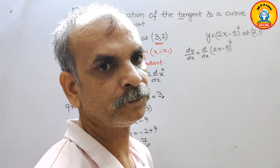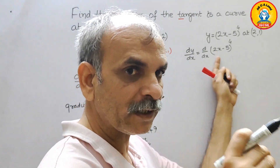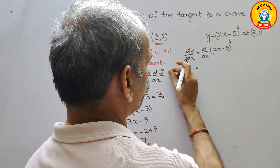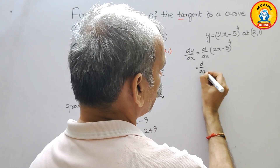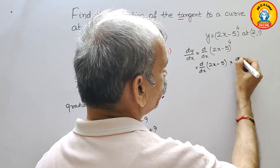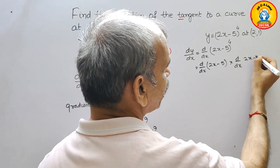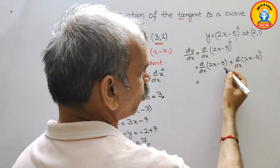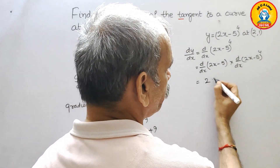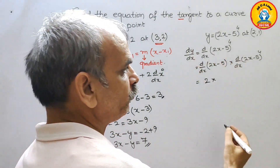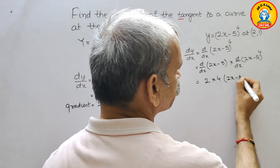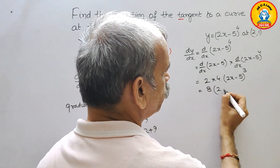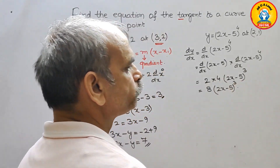Here we have to use the chain rule. In the chain rule, first we differentiate whatever is inside the bracket, then we differentiate the bracket with the power. So you get d by dx of (2x minus 5), multiplied by d by dx of (2x minus 5) to the power 4. Differentiating inside gives 2. Using the power function on the outer part gives 4, then (2x minus 5) to the power 3. So the result is 8 times (2x minus 5) cubed. This is your differentiation.